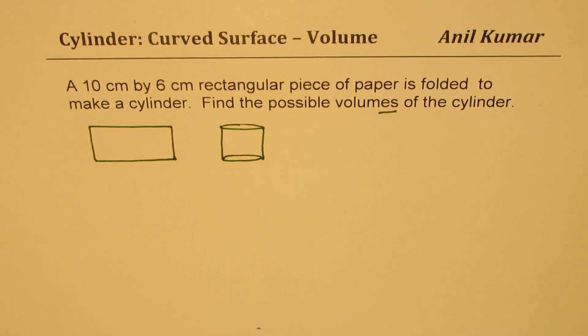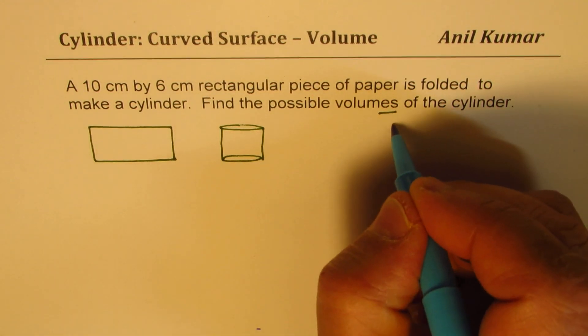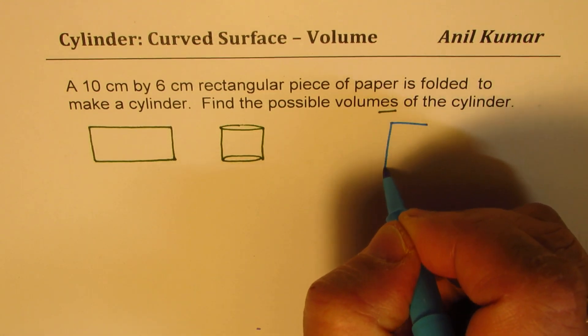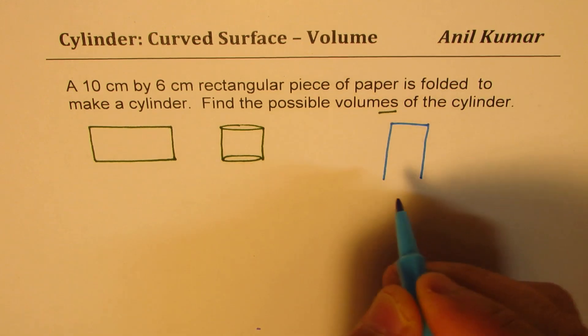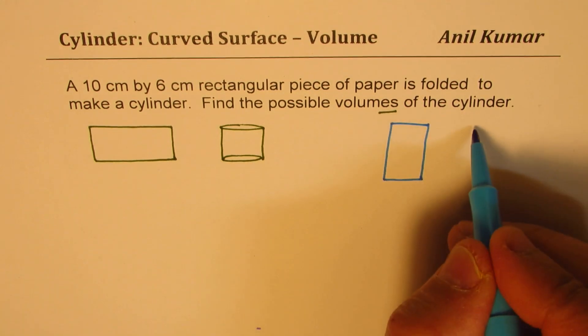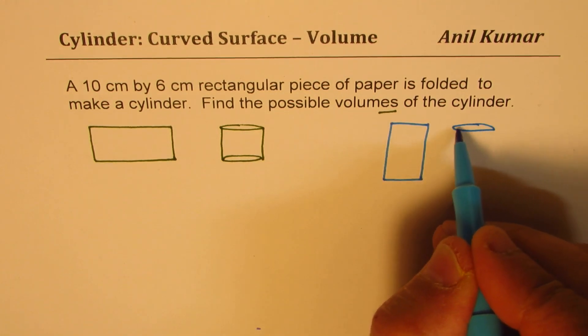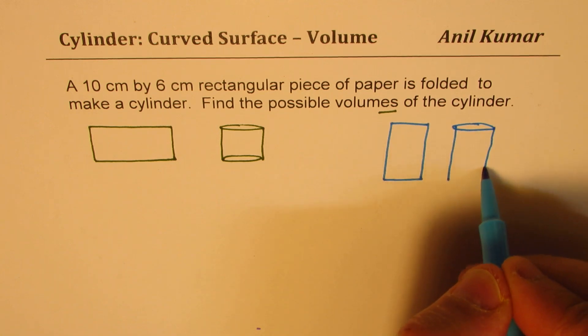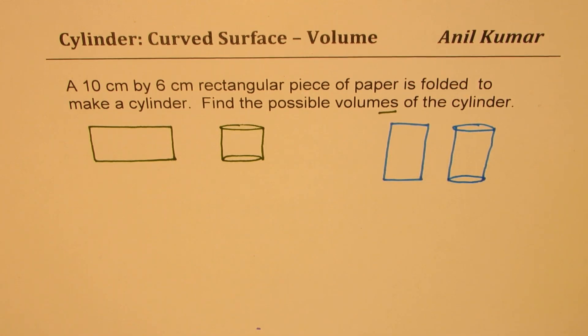So that is one way you could do it. You could also draw the rectangle in this fashion. And when you fold it, you may get a cylinder which is kind of like this. So as you can see, we have two scenarios here. So now I hope you understand the question. We could get possibly two volumes, two different cylinders.